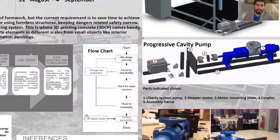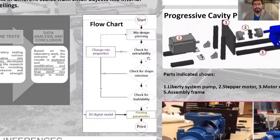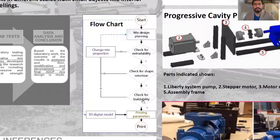This is the flowchart of the process, where we start with the material mix design planning, then check for extrudability. If we do not achieve this, we change the mix proportion and then proceed with the shape retention property, then buildability, and then the printing parameters.